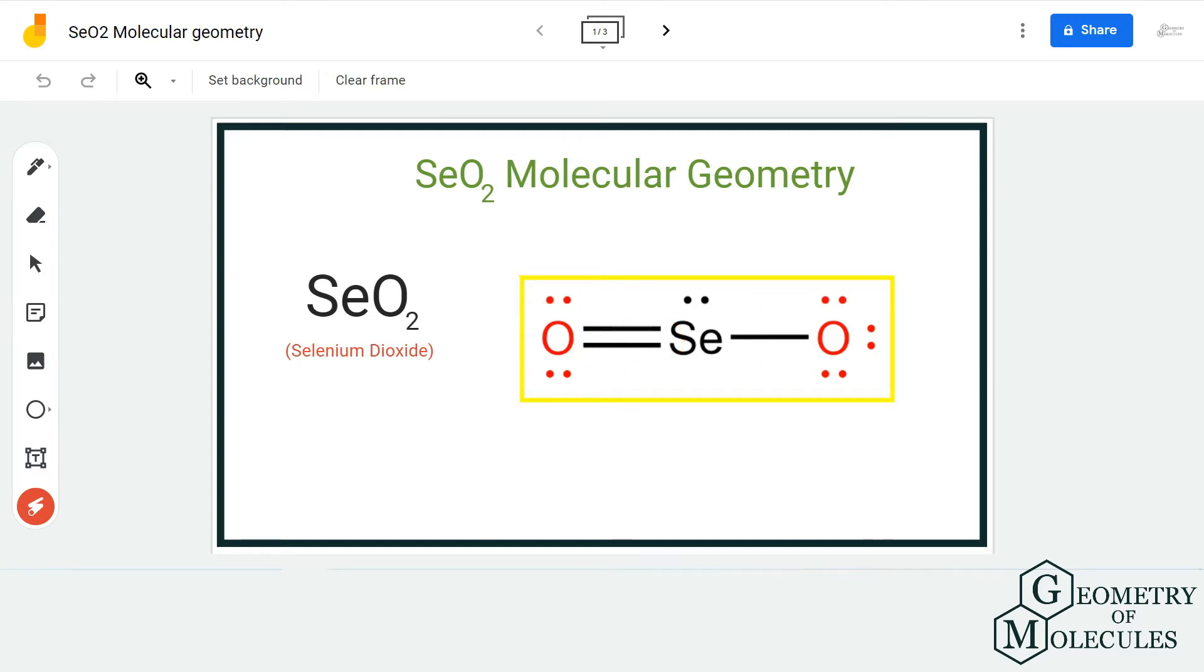So this structure might seem linear because of the arrangement of the atoms, but let's not forget about the lone pairs of electrons which are present on the selenium atom over here.